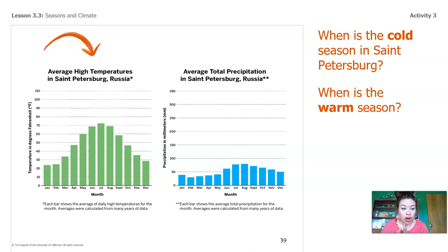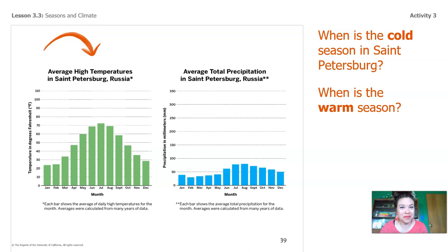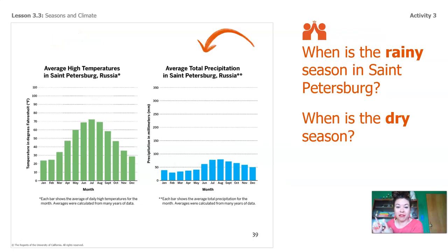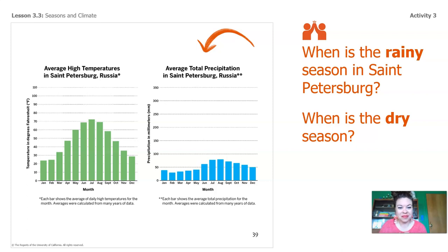January, February, March — and then we're going to skip over the warm months and go to October, November, December. Those are the cold months, the cold season. When is the warm season? It's warm during those months when the bar graph goes up — so it's warm during May, June, July, August, and September. Now let's look at the blue graph — total rainfall or total precipitation. When is the rainy season in St. Petersburg? Name the months when you see the bars go up. June, July, August, September. When is the dry season? January, February, March — those are the months when there's less rain, so we would consider that the dry season.